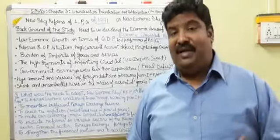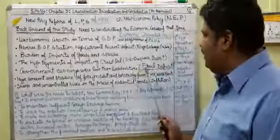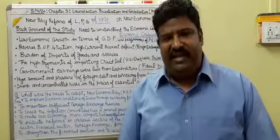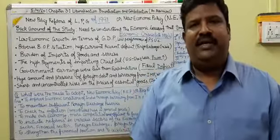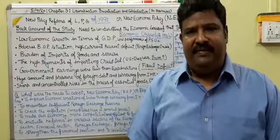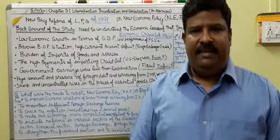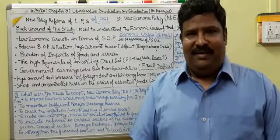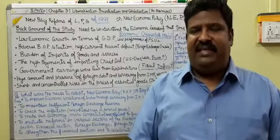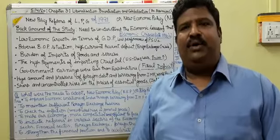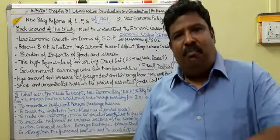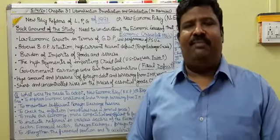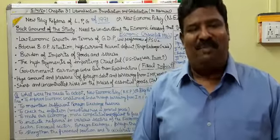A budget deficit or fiscal deficit arises when total expenditure exceeds total receipts. To overcome this fiscal deficit, there is a term in economics known as deficit financing. In deficit financing, the government approaches the Reserve Bank of India — the central bank — for printing new currency. When the RBI prints new currency and gives it to the government, there is more money supply in the market.